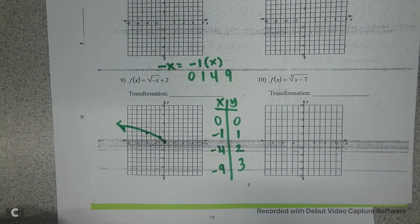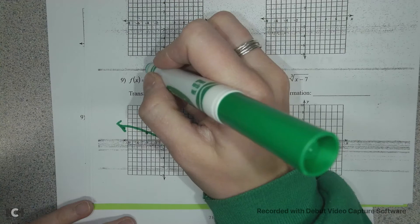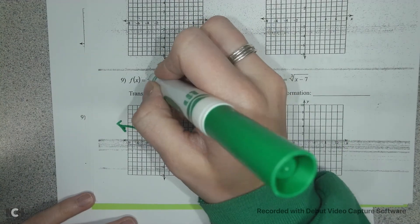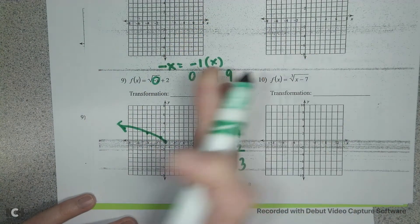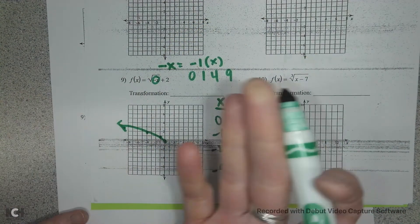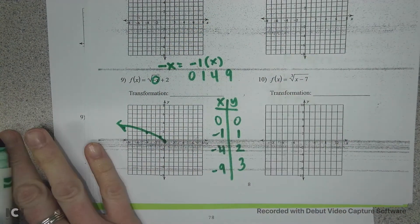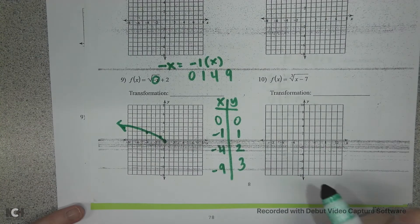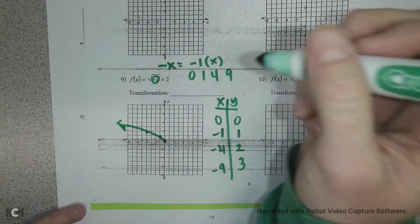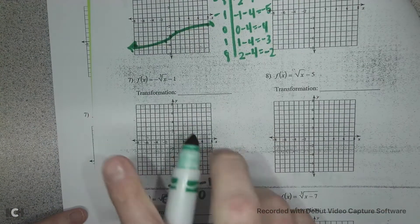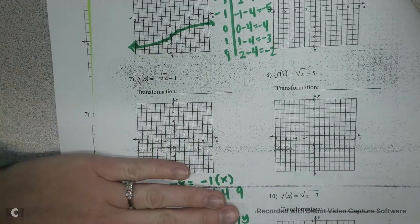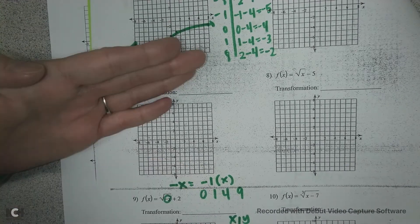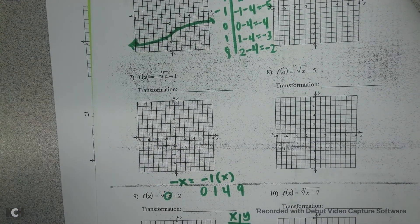When you have a negative inside of your radical, it's going to flip it over the y-axis. And when it's on the outside, like on number 7, it's going to flip it down over the x-axis.